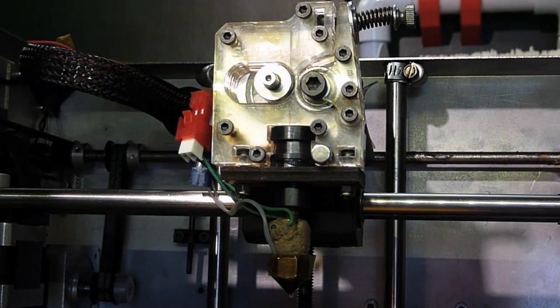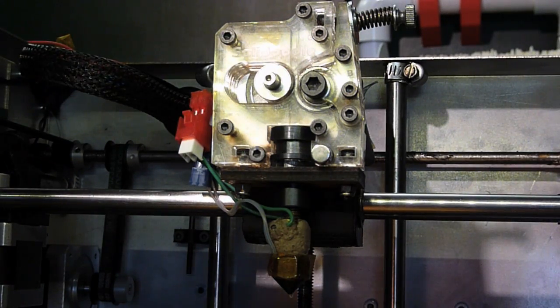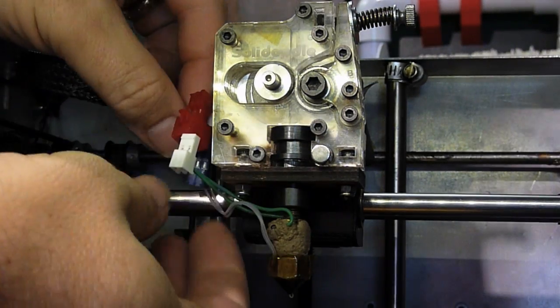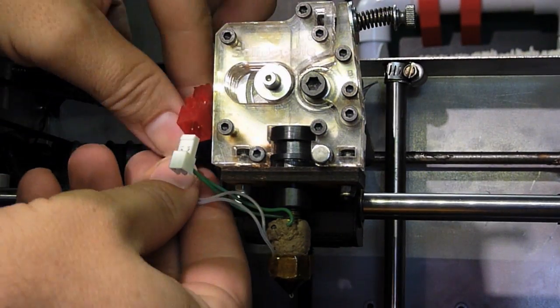So the first step in getting the extruder apart to clean out the nozzle and barrel is to disconnect the heater and the thermistor.